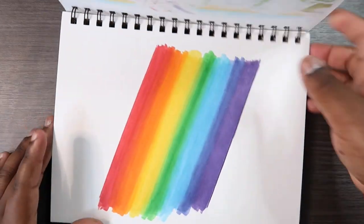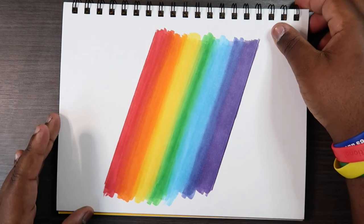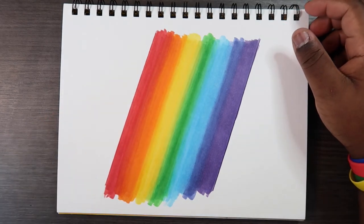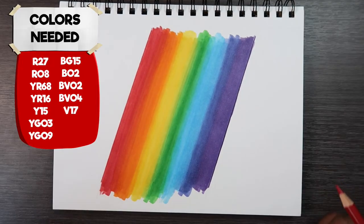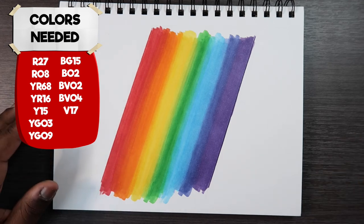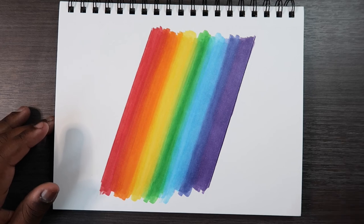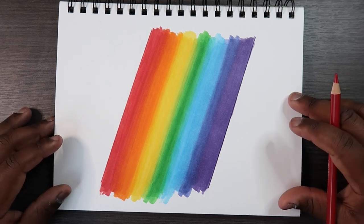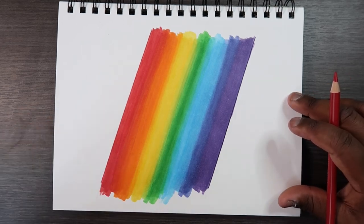But in any case that's how you color a rainbow with Copic markers and all the colors that I use in the video will pop up somewhere on the screen if you want to try this out for yourself as well. But if you like my video and you found it useful give it a like and a comment, subscribe if you haven't and tap the notification bell so you never miss an upload and I'll see you in my next video.